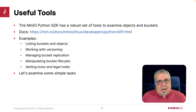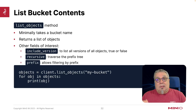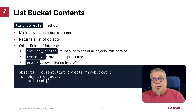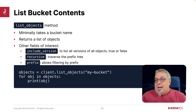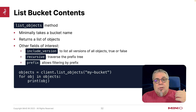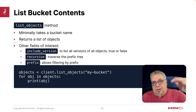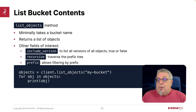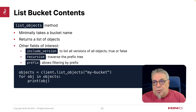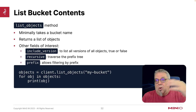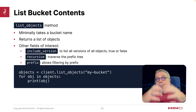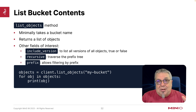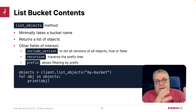Let's take a look at some simple tasks. You can list your bucket contents — the list_objects method gives you a list of objects, and you can print every single object as it comes back. You can do versions, you can do recursive, and if you have a prefix tree that you want to traverse, you can also filter by a specific prefix. So if you have a bucket that had an event on it, I can go back and see what objects are in that bucket.